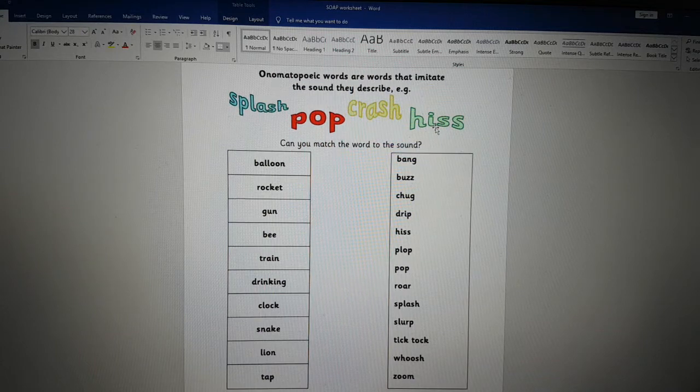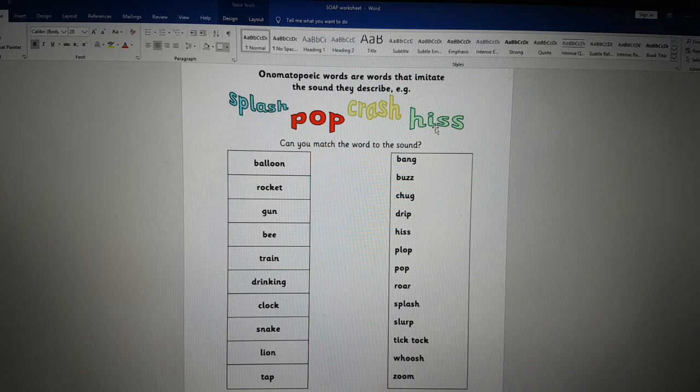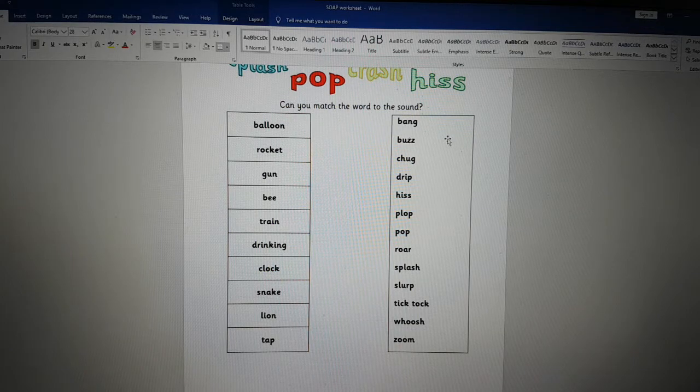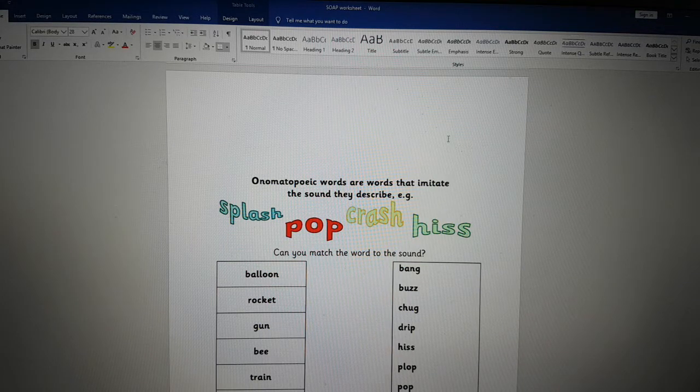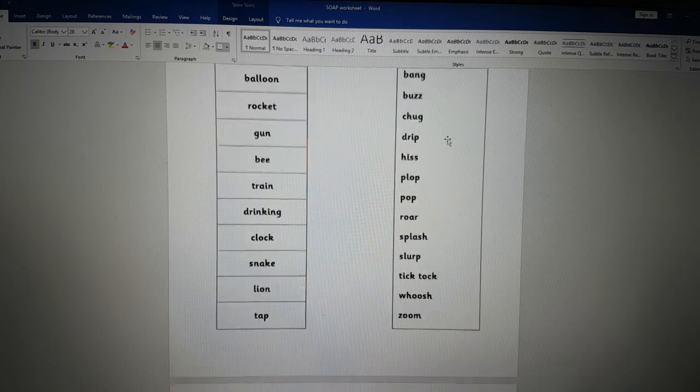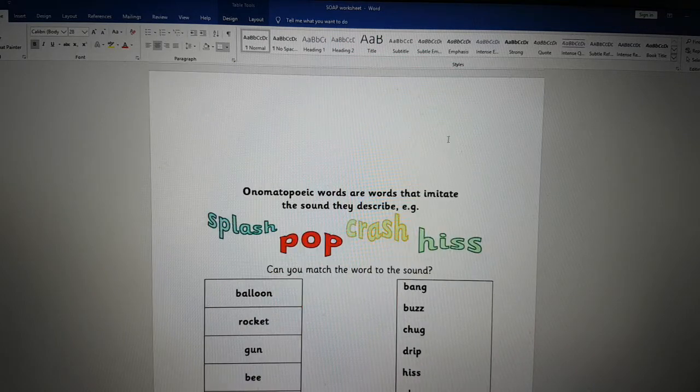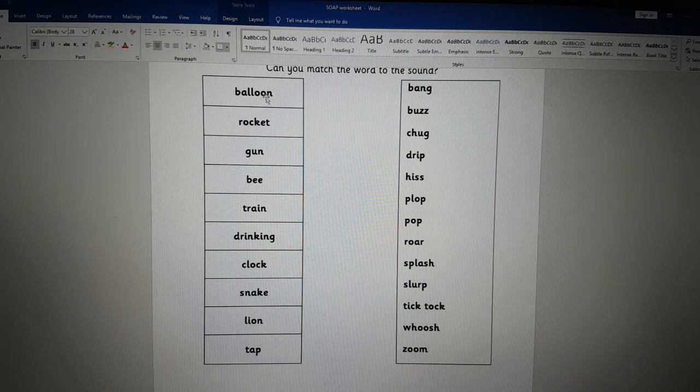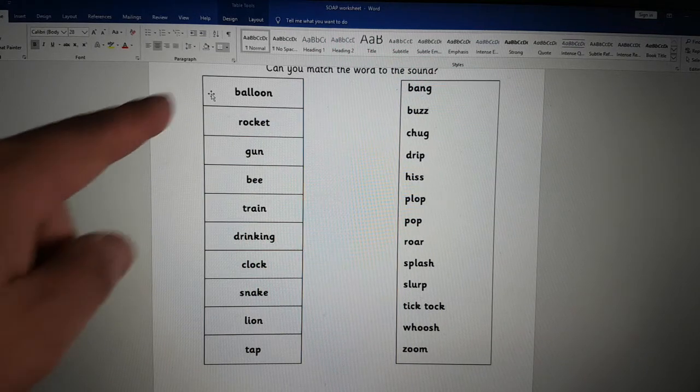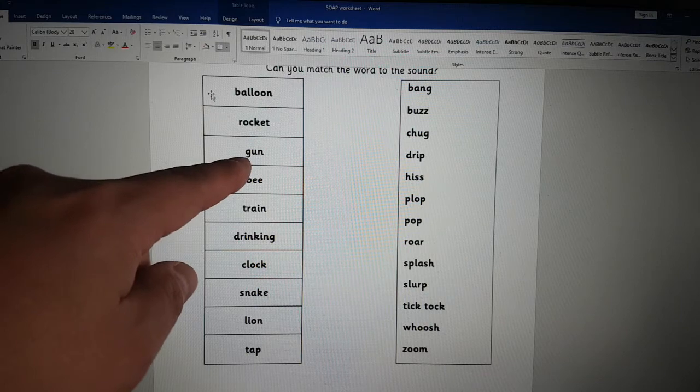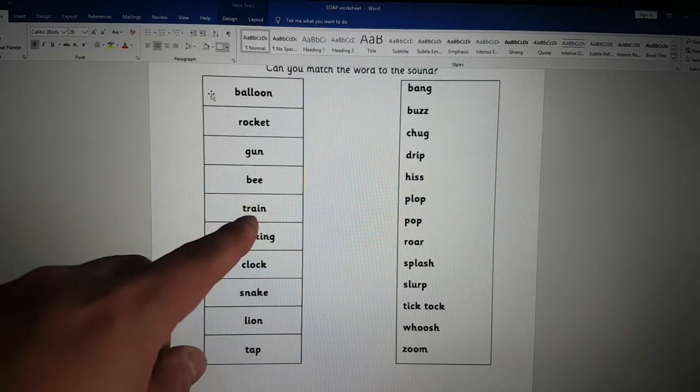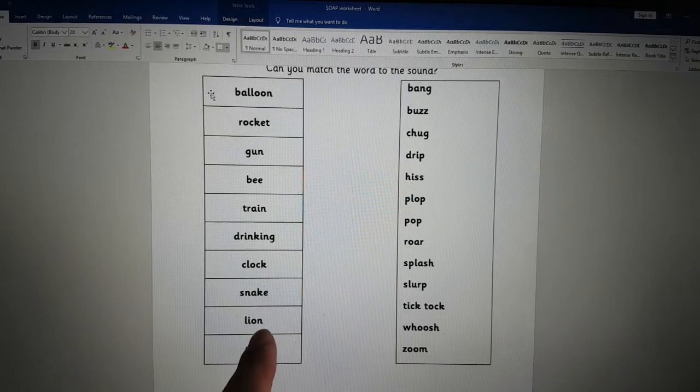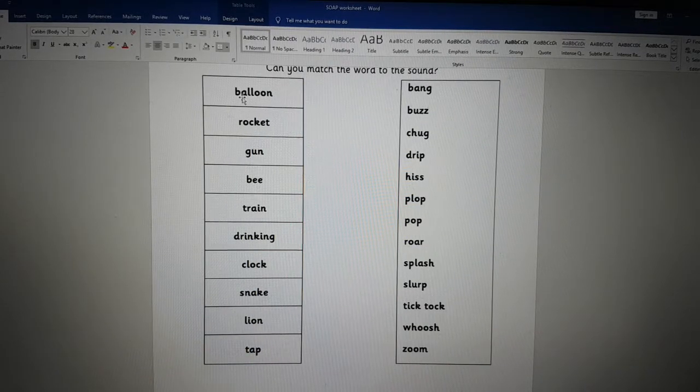Now we move on to onomatopoeia. Words that make a sound. So match these words. We have the words balloon, rocket, gun, bee, train, drinking, clock, snake, lion, and tap. If you're not sure these words, go to Google and Google Images.